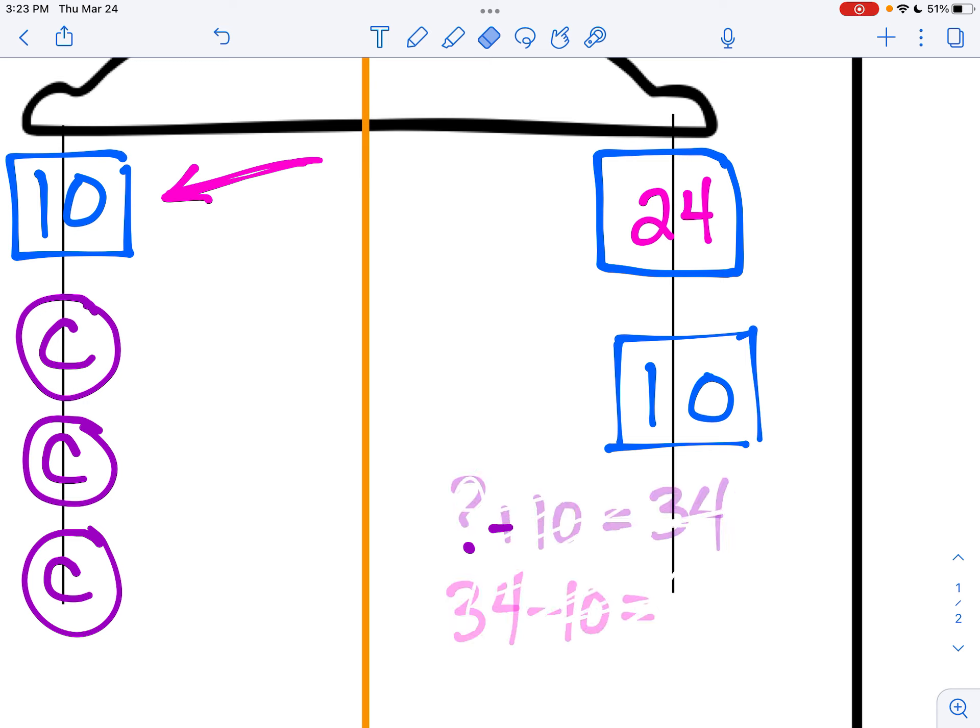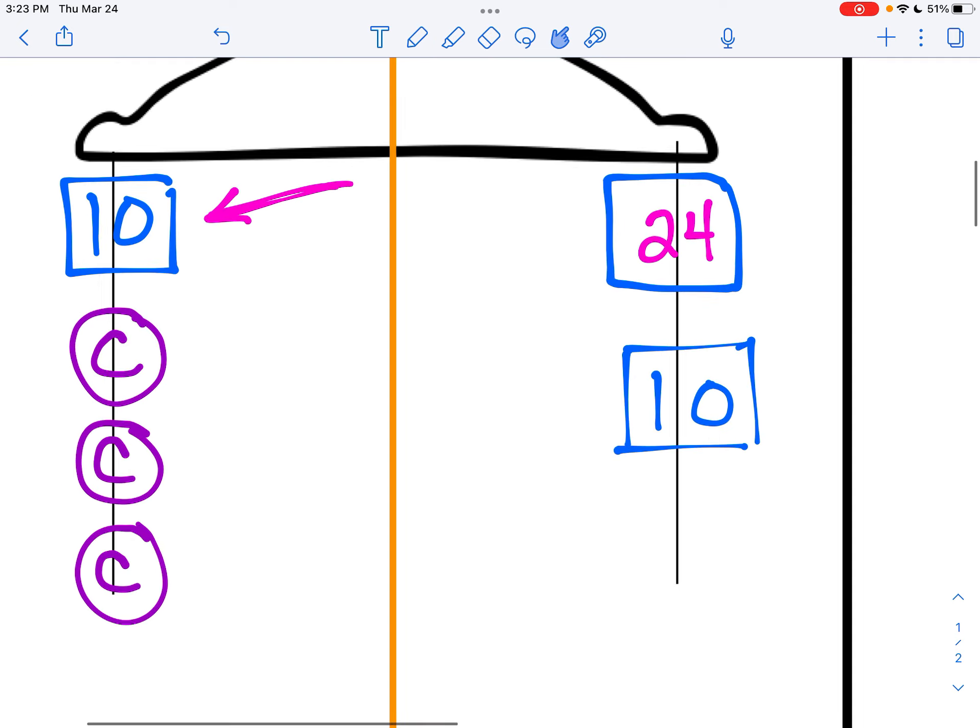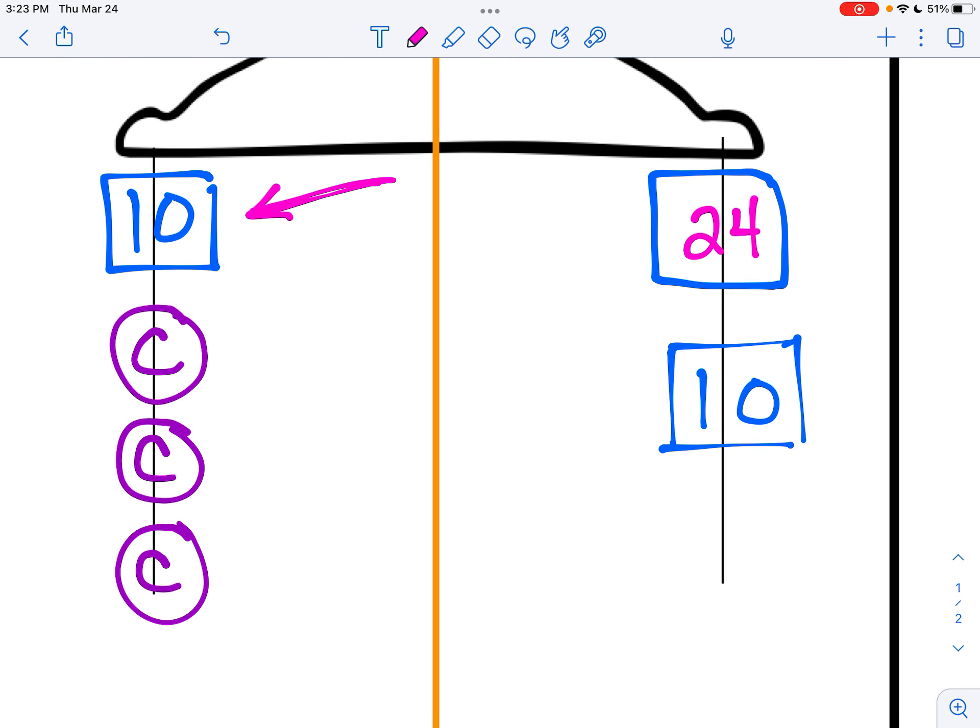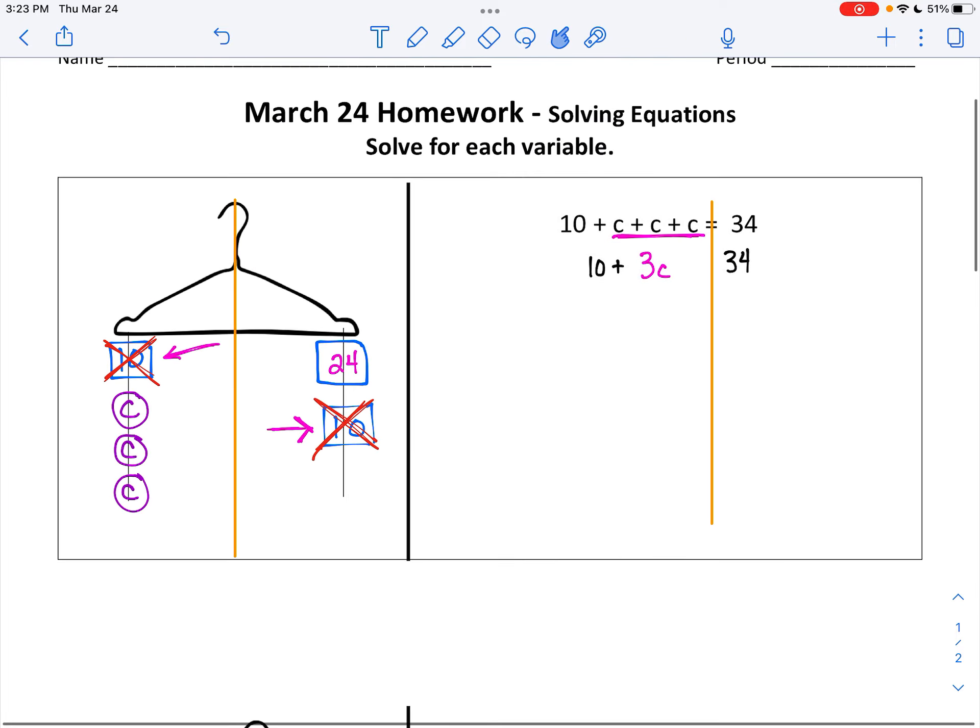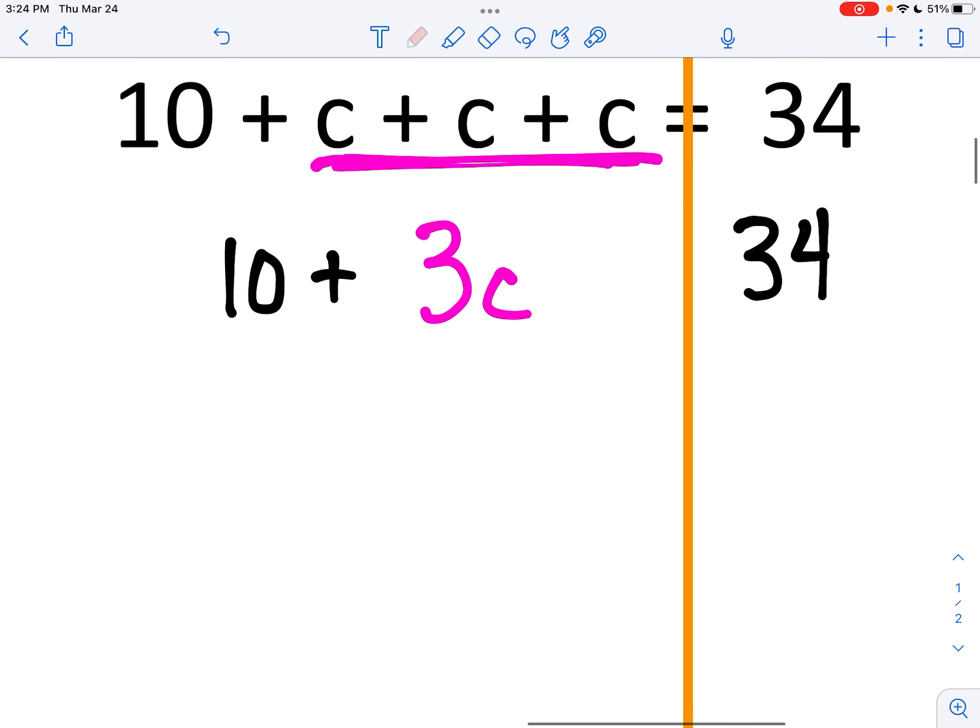Now I can take away 10 from both sides. I'm going to cross it out because there's a 10 over here too. I'm going to cross it out on the left and I'm going to cross it out on the right. And that in my equation looks like this. Minus 10 on the left side and minus 10 on the right side.